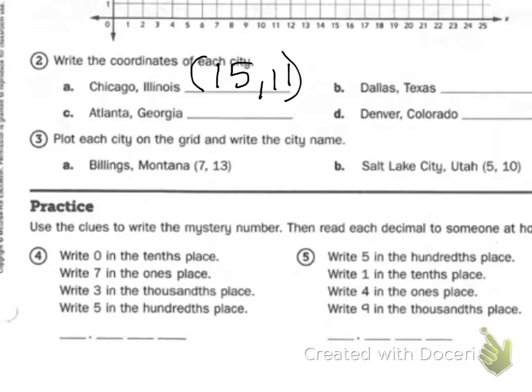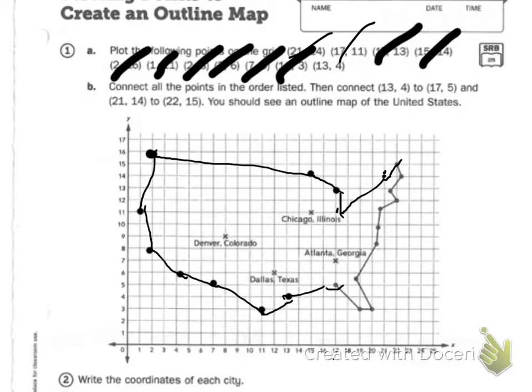Billings, Montana is 7 and 13. If I go back to my other slide, I'm going to change my marker to a red. These are the ones I'm plotting now. I have to go 7 and then count up to 13. 1, 2, 3, 4, 5, 6, 7, 8, 9, 10, 11, 12, 13. So, that red dot and I'm going to write Billings.